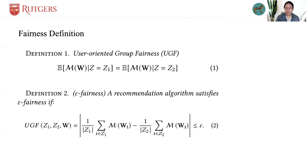The user-oriented group fairness in recommendation is defined as Definition 1. It requires that a fair recommendation algorithm should offer the same recommendation quality for different groups of users. Furthermore, we use the difference of average recommendation performance between two groups to measure the user-oriented group fairness of a recommendation algorithm.